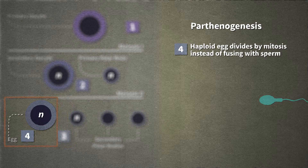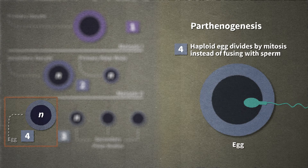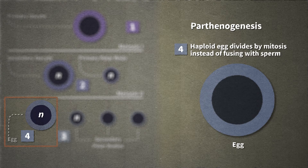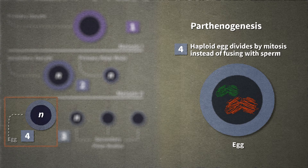Usually a haploid sperm fertilizes the haploid egg to produce a diploid zygote, which develops into an offspring. What if, instead of fusing with a sperm, the haploid egg divides by mitosis? For this to occur, chromosomes have to be replicated. During the S phase of interphase, the DNA of the single chromatid making up each chromosome in the developing egg is replicated. The chromosomes now consist of two identical sister chromatids joined at the centromere.